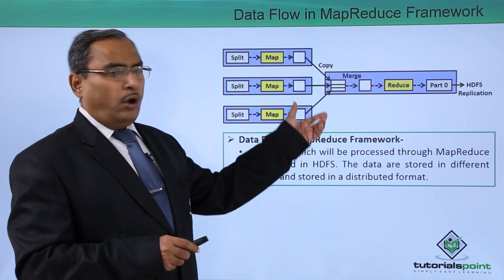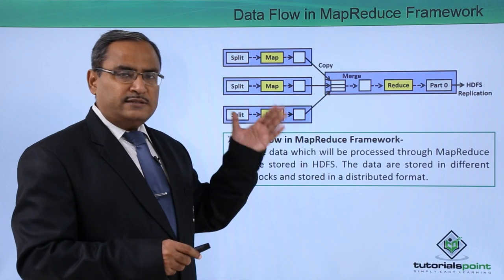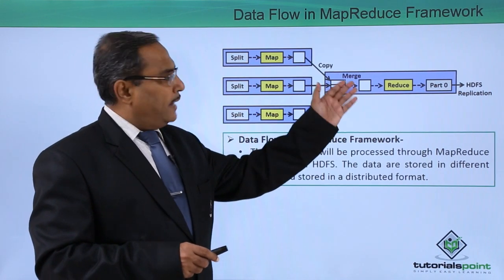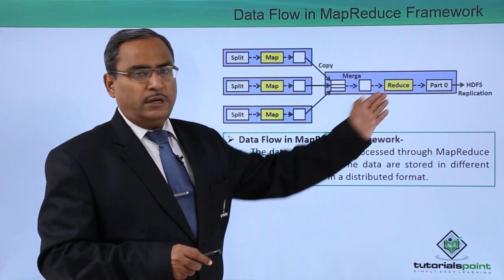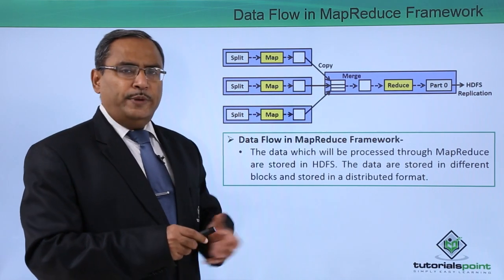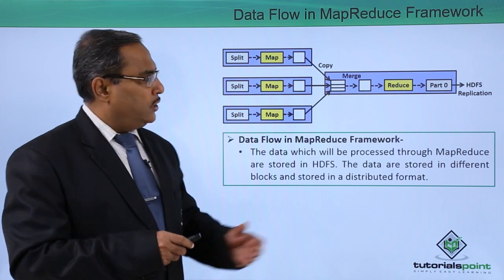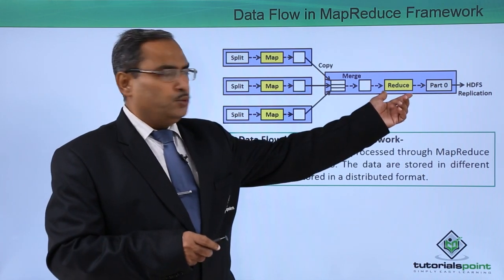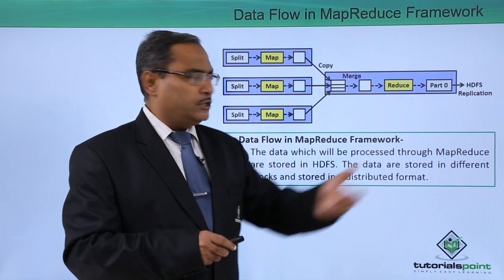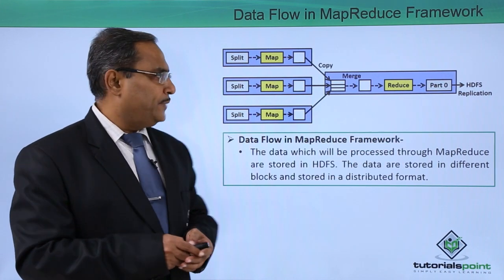All the outputs from these mappers will undergo shuffling and sorting, and that will be made available to the respective reducer. The sorting will be done on the values stored in the keys. Then the reducer will perform the reduce operation and produce the output — stored as part-0 on HDFS, the Hadoop Distributed File System.